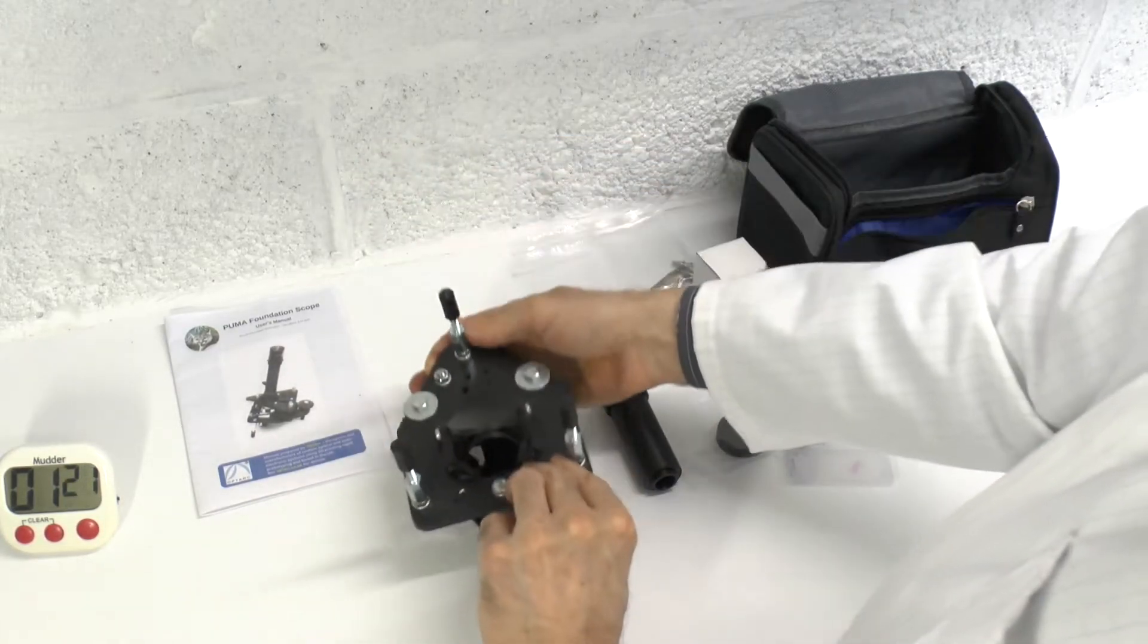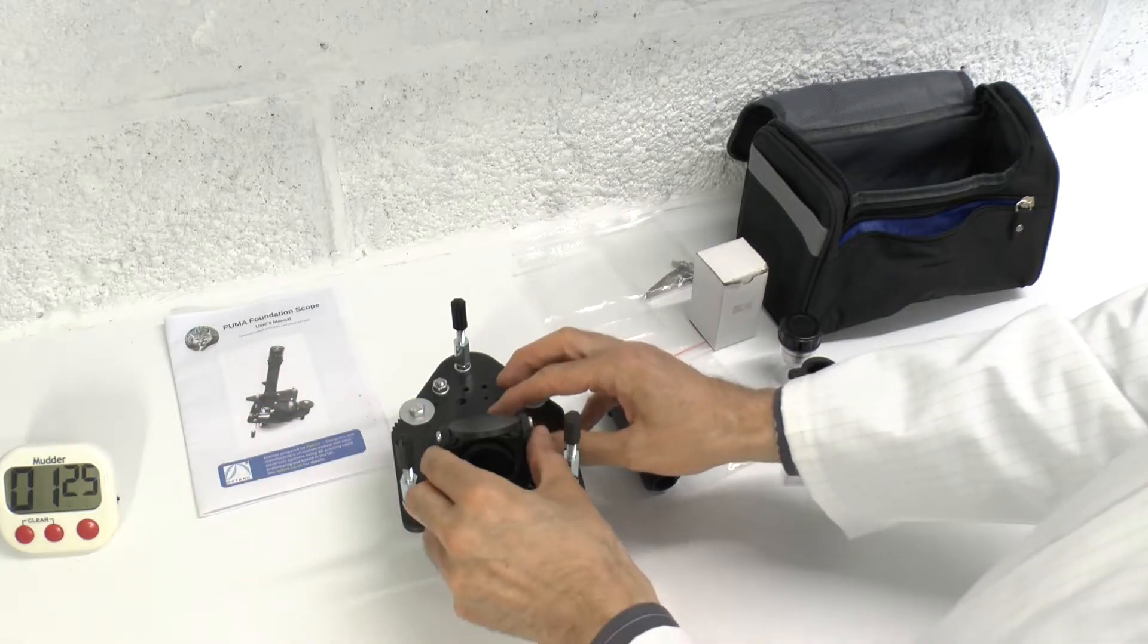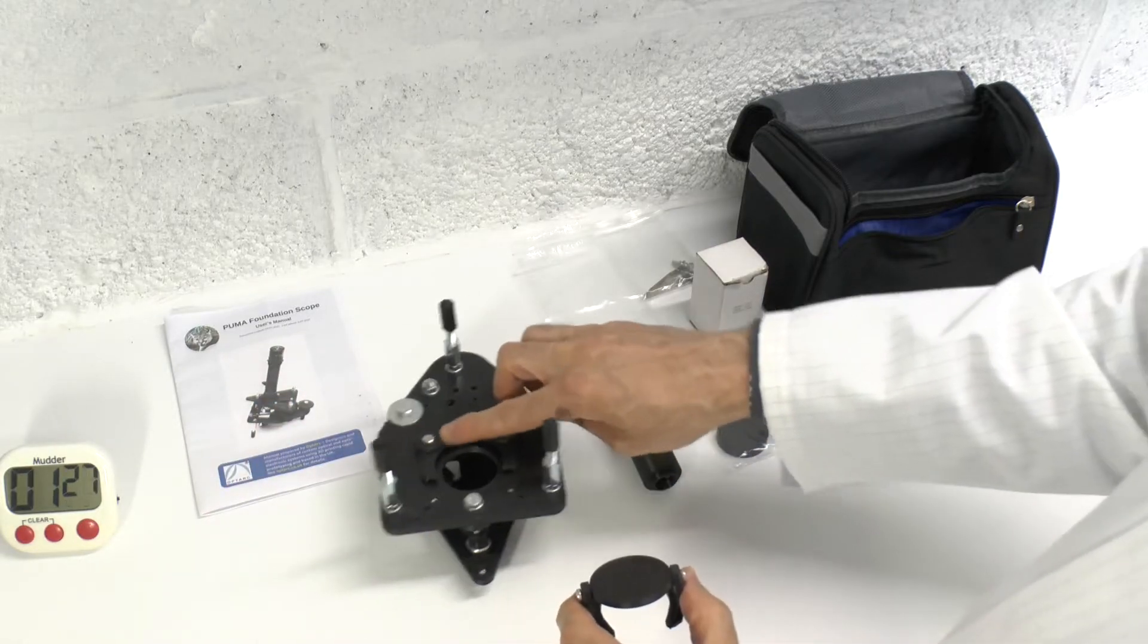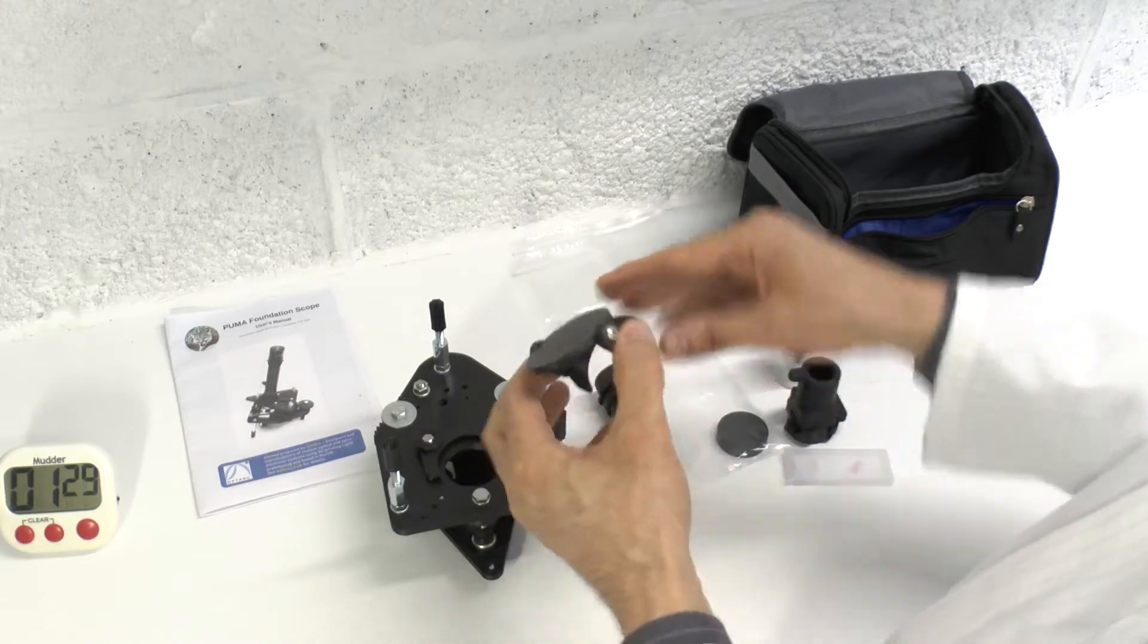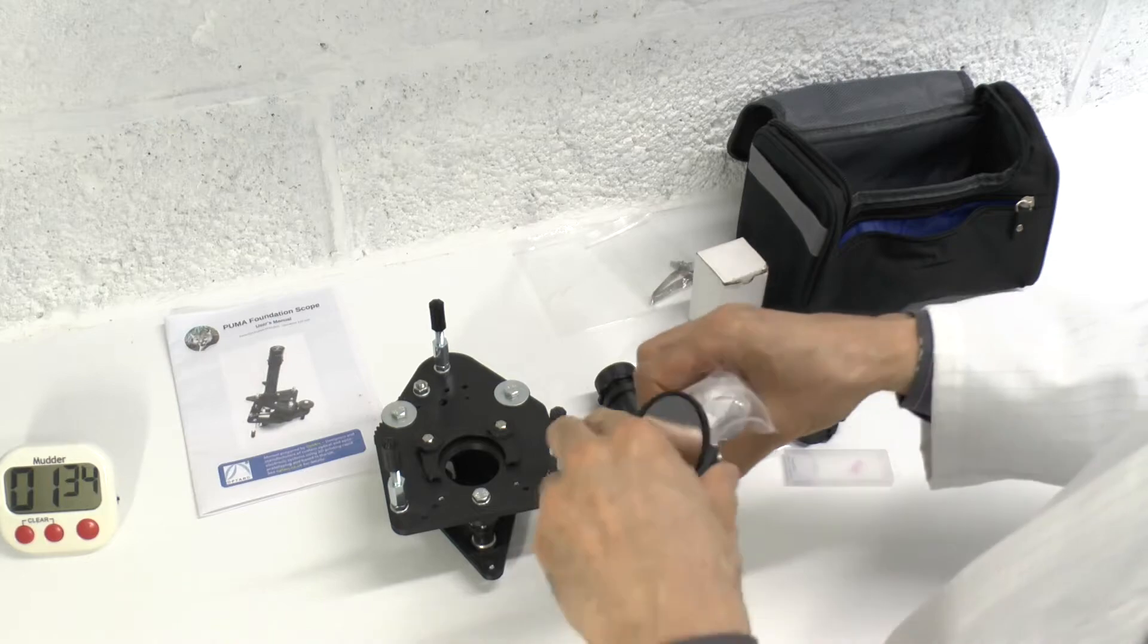Turn the scope upside down, loosen the thumb screws, but don't remove them altogether, just enough to take out the mirror. You can leave this attachment in place. Put the mirror also in its protective pouch.